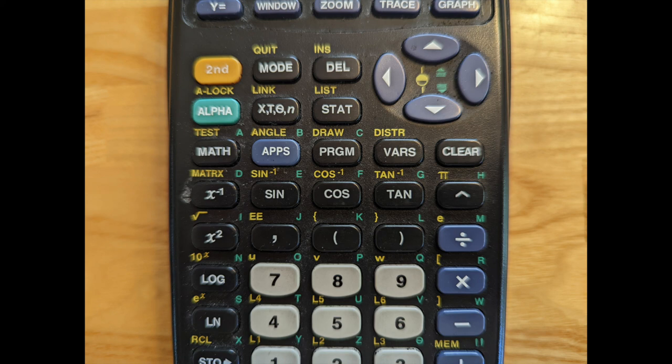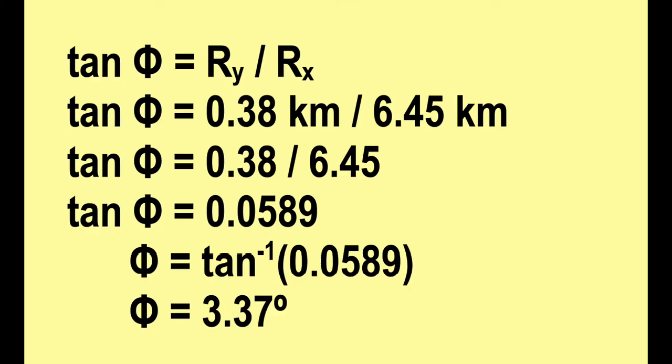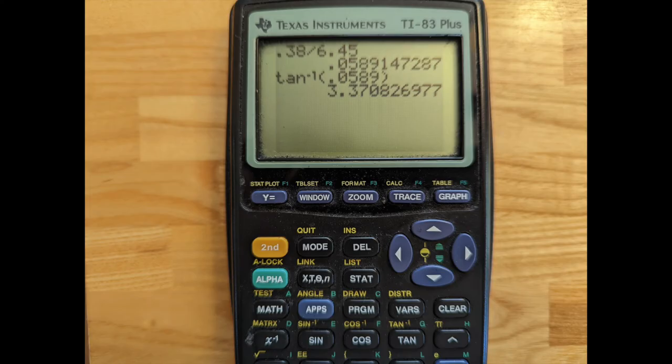The way you get that is you press the yellow button and then the tangent button to produce the inverse tangent. So to get the answer on my calculator, I press the yellow button and then the tangent button, and then I type in 0.0589 and press enter. The result is 3.37 and that is in degrees.